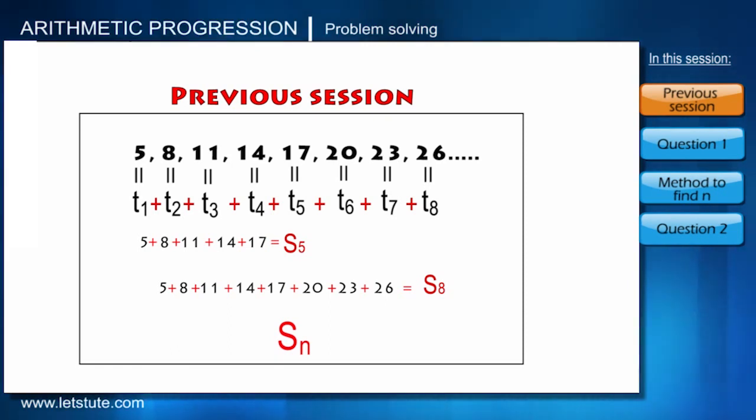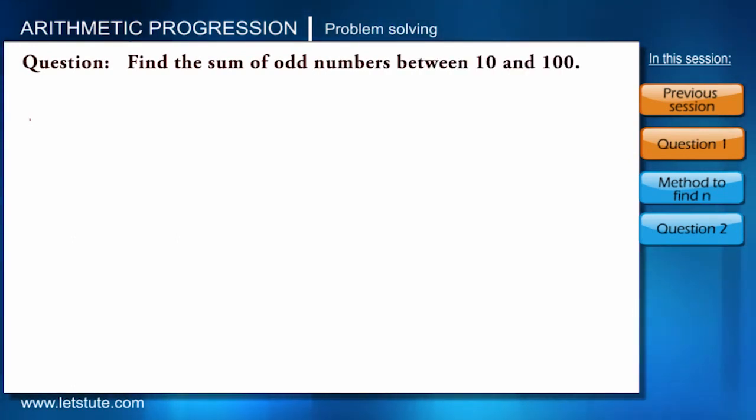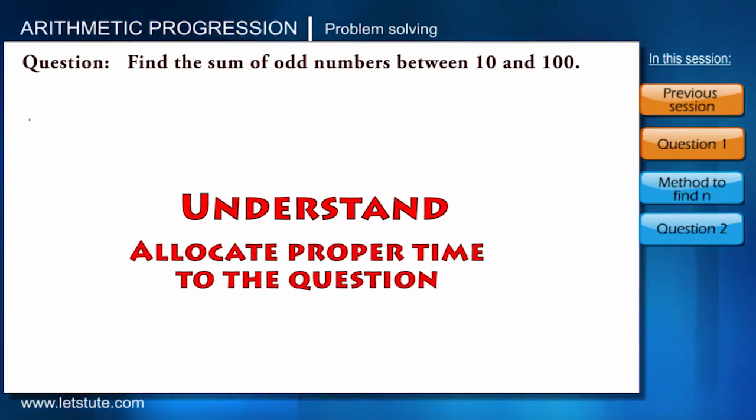Now let us quickly take some questions and solve it. Here's a question which says find the sum of odd numbers lying between 10 and 100. Friends, always remember one thing: in any subject on any question, first of all understand the question.